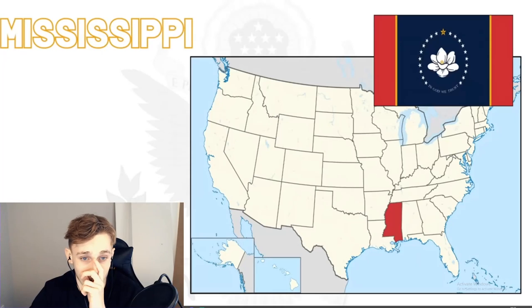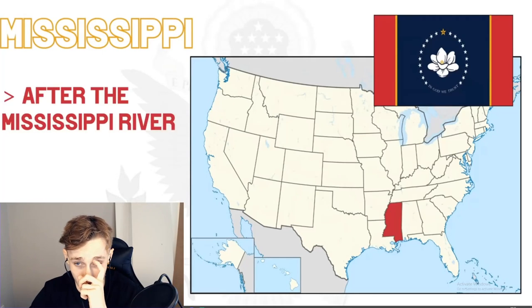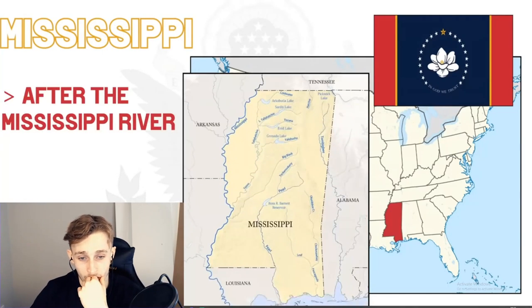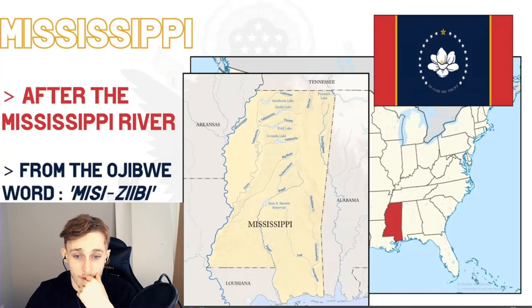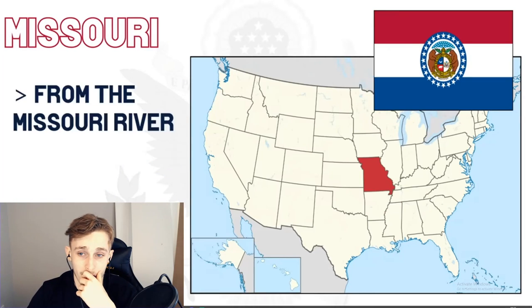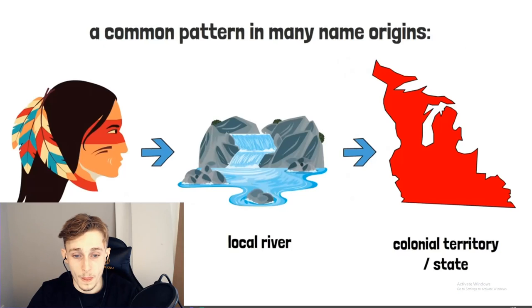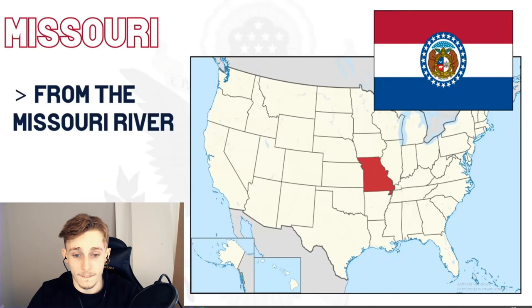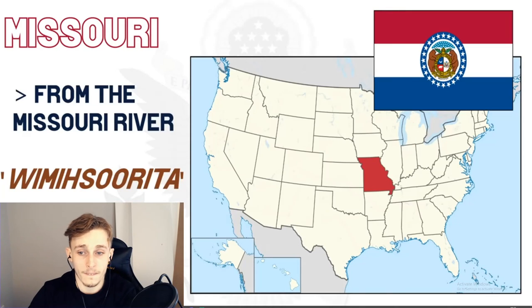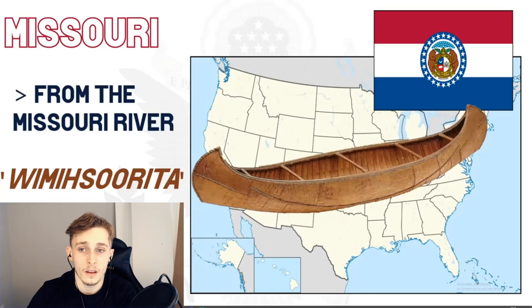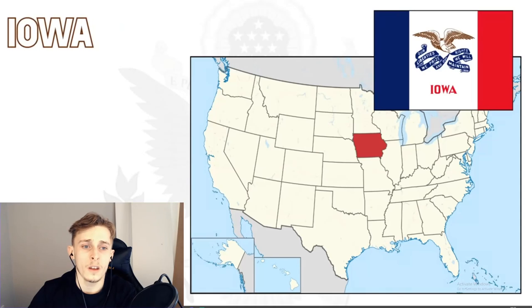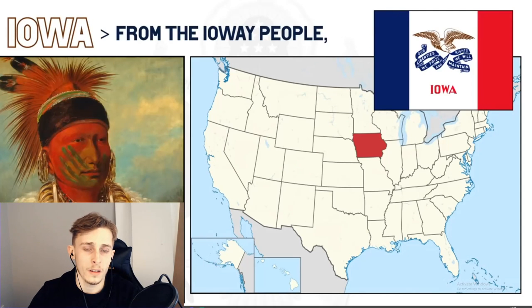Still a pretty cheap price for something equivalent to almost a third of US territory. Mississippi follows the trend of being named after the local river, which defines its western boundary. European settlers named it after the Ojibwe word 'misi-ziibi,' which translates to 'great river.' The Missouri River similarly led to the naming of the state of Missouri — the river got its name from the indigenous Missouri natives, who were called 'wimisorita,' meaning 'those who have dugout canoes.'